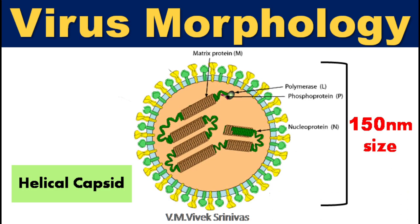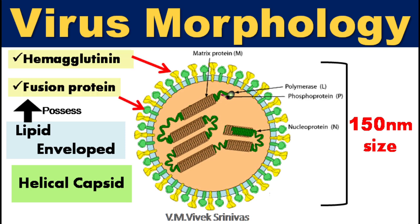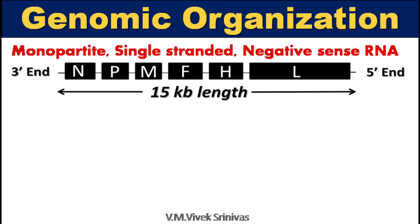Virus morphology: This virus possesses a helical capsid and is also covered with a lipid envelope all around. The entire virus is about 150 nanometers in diameter. This lipid envelope is studded with two important proteins: the hemagglutinin protein and fusion protein. Among all, the hemagglutinin protein is the immunodominant protein which plays a major role in antigenicity. Genomic organization: The genome is monophasic, single-stranded, and negative-sense RNA.